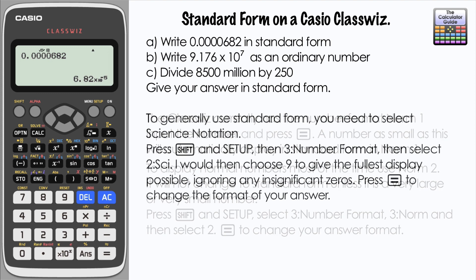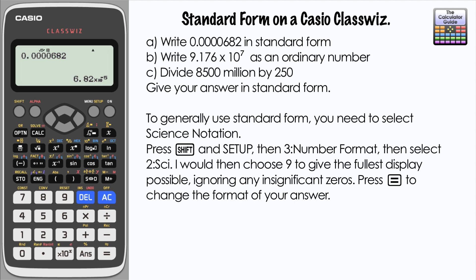Now if I wanted a general standard form number, let's say that I had maybe a number that only had two figures and I wanted to change that, or if I just wanted to change it to standard form in general, it's under the setup menu. The number format menu is science notation, which is another way of describing standard form.